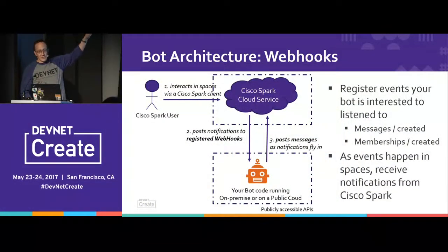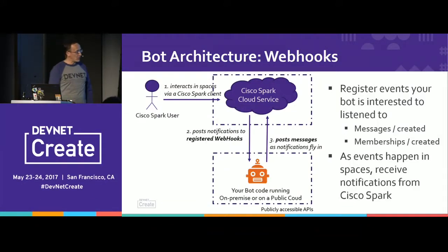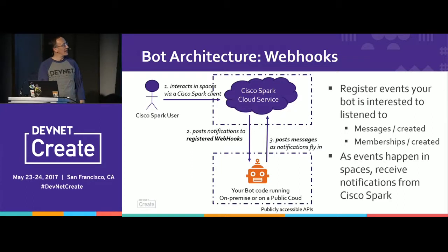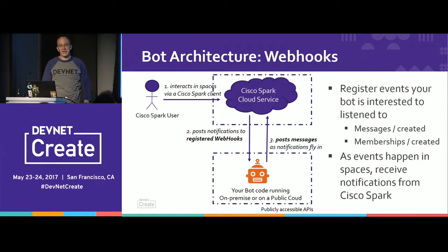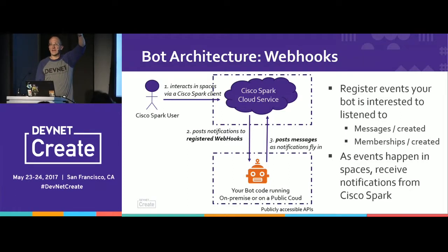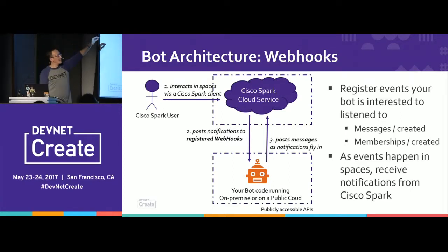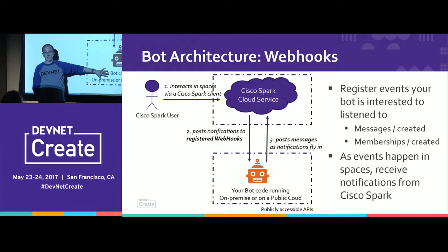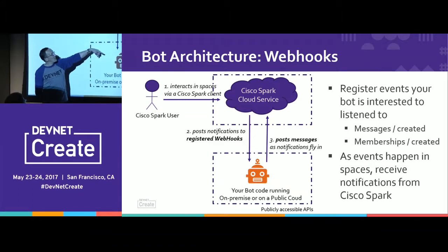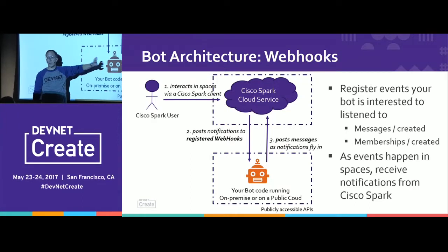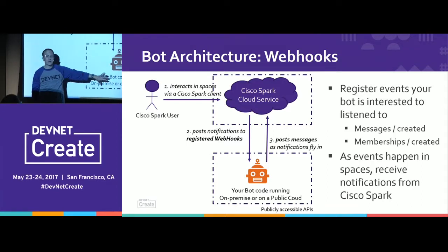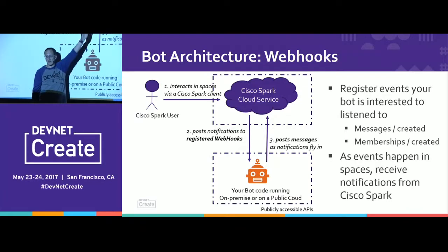When you create a bot — you saw my bot working earlier, the Cisco DevNet bot — you ask a question and get an answer. It's your code running somewhere, either at your enterprise company or in a public cloud. The user is chatting, the cloud platform gets the messages sent from the person and then pushes them back to a publicly available endpoint on the internet. For that to happen, you need to create what we call a webhook to register where your bot is listening. That's the first part of the job. The second part is when you get those messages coming, you just send them back. You post back.